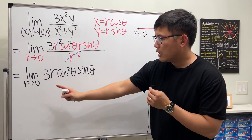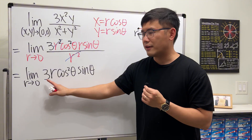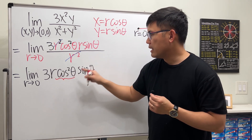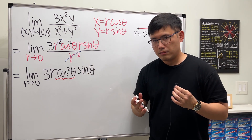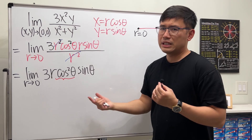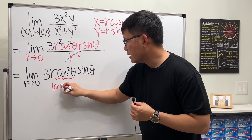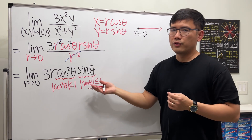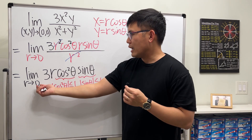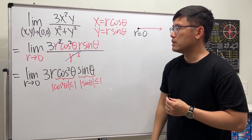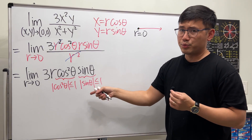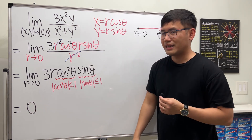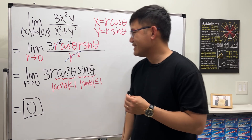As r approaches 0, we essentially have 3·0·cos²θ·sinθ. The maximum value of |cos²θ| is 1 and the maximum value of |sinθ| is also 1, so in the biggest possible case we get 3·0·1·1 = 0. By the squeeze theorem, the limit is zero. The answer is 0.